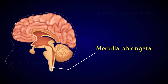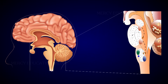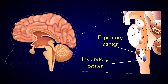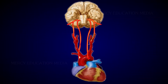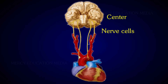The respiratory centre consists of an inspiratory centre and an expiratory centre. The axons from the nerve cells of these centres lead to the intercostal muscles through the intercostal nerves and to the diaphragm via the phrenic nerves.